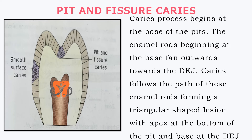We will first discuss the microscopic structure of caries in enamel and then in dentine. Coming first to pit and fissure caries: the caries process begins at the base of the pit. The enamel rods beginning at the base fan outwards towards the dentino-enamel junction. Caries follows the path of these enamel rods and forms a triangular-shaped lesion with apex at the bottom of the pit and base at the dentino-enamel junction — apex upwards and base downwards.